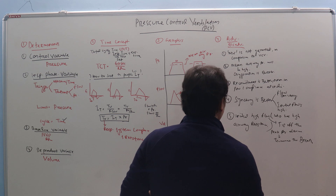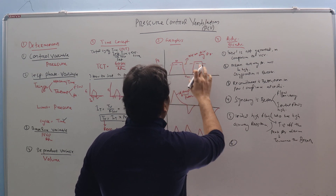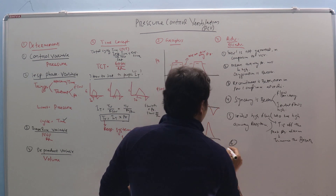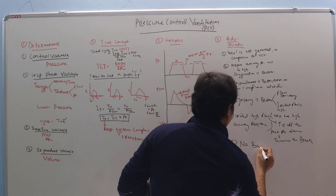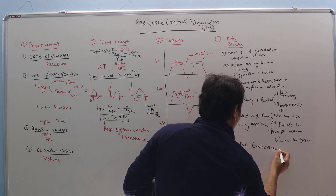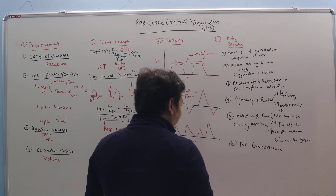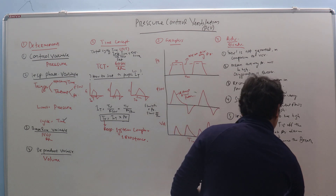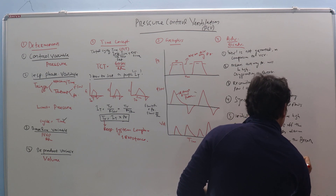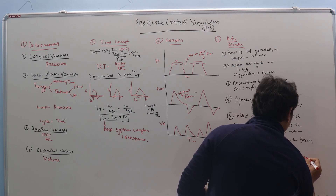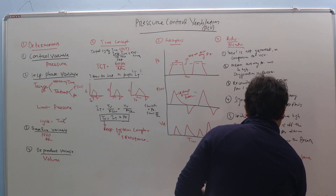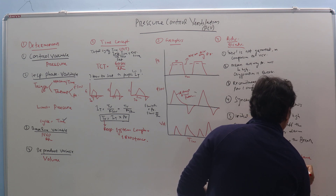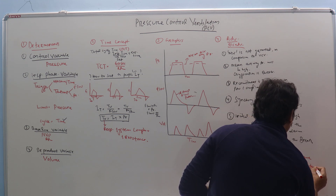Sixth advantage: there will be no barotrauma because you have controlled the pressure. However, if the compliance of the lung improves, the same set pressure can deliver a higher tidal volume, potentially producing volutrauma. So one must monitor tidal volumes carefully when lung compliance changes.